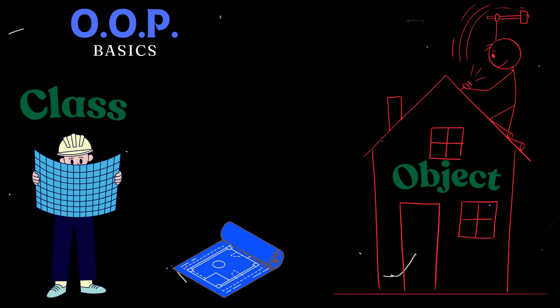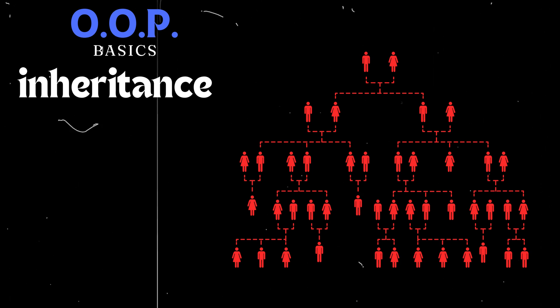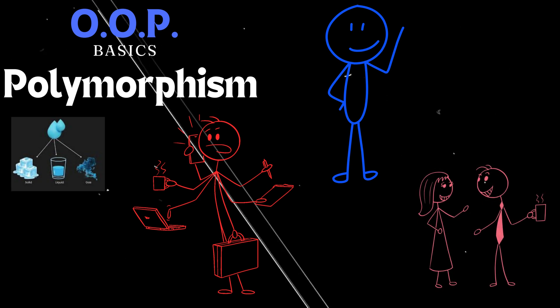Imagine a class as a blueprint for creating objects. An object is then an instance of that class, containing its own data and behavior. Inheritance allows you to create new classes that inherit the properties and methods of existing classes, fostering code reuse and efficiency.